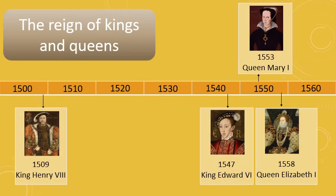This timeline shows a reign of kings and queens, more specifically the reign of the Tudor family in the 16th century. Looking at the timeline, we can see that Henry VIII became king of England in 1509. He ruled for 38 years before he died and his son Edward took his place. Edward VI only reigned for six years, however, before his sister Mary succeeded him as queen.